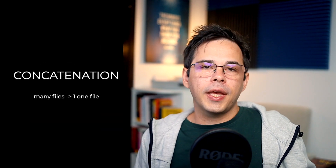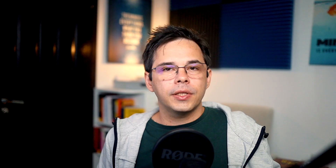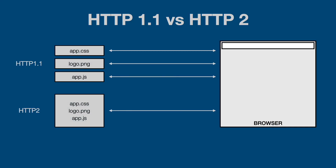Let's take a quick look at some of the features that the asset pipeline provides to solve these problems. Concatenation is a feature that merges together many files into one big file. This allows browsers to make fewer requests for assets, which is critical when using HTTP 1. With HTTP 2, this isn't such an issue anymore. In fact, it's sometimes better to have many requests for smaller files than one request for a big file.